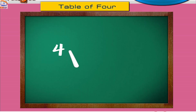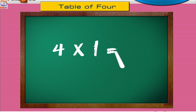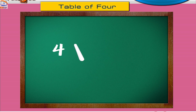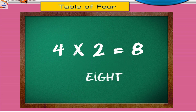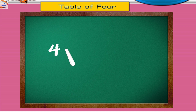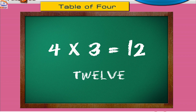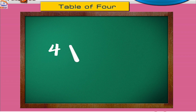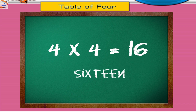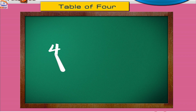Four ones are four. Four twos are eight. Four threes are twelve. Four fours are sixteen. Four fives are twenty.